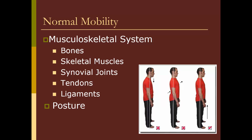Normal mobility is really dependent on a couple of different things. One is a functional musculoskeletal system. Structurally, this includes the bones that provide framework, our skeletal muscles that allow for movement, the synovial joints where those bones articulate, tendons which connect our muscles to our bones, and ligaments which connect our bones to bones. It's also important that they be in the correct alignment or posture. Good alignment means that there's no unusual stress on the joints and muscles, which requires not only an intact musculoskeletal system but also an awareness of one's center of gravity.